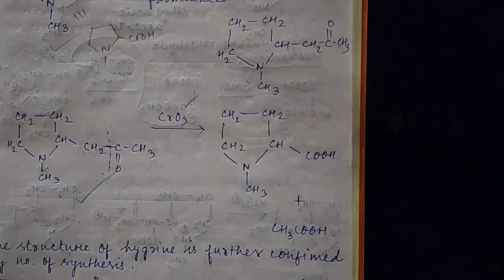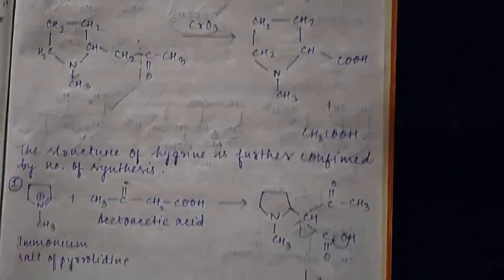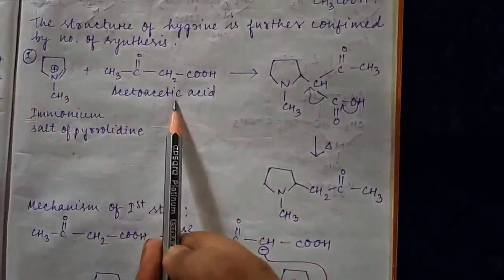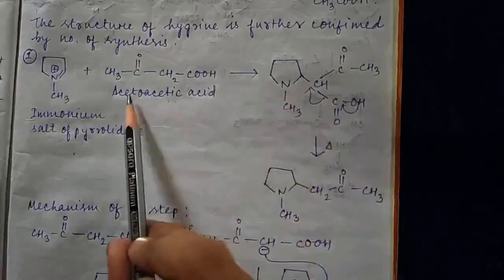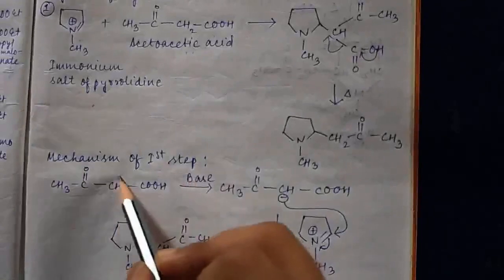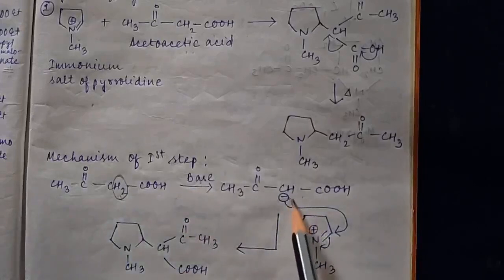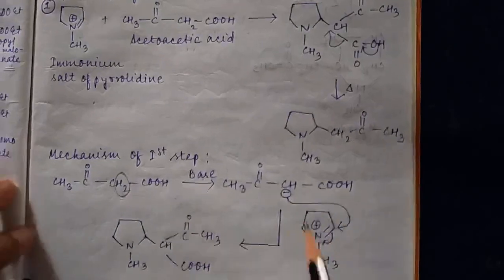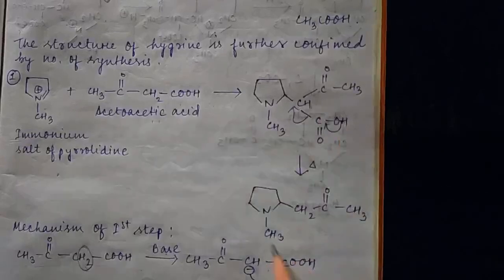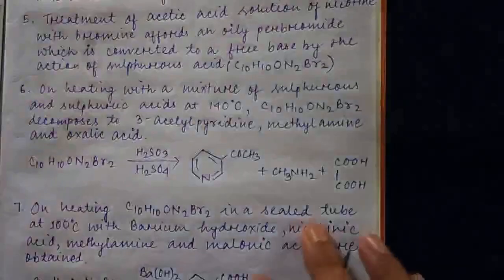Further, the structure of hygrine is confirmed by its synthesis. There are many syntheses. In the first synthesis, ammonium salt of pyrrolidine is treated with acetic acid. This is a condensation reaction. These hydrogens are very acidic, so an anion is formed. The ammonium salt of pyrrolidine attacks this position with nitrogen, and we get this compound. Upon decarboxylation by heating, CO2 is removed and we get hygrine. This is one synthesis.